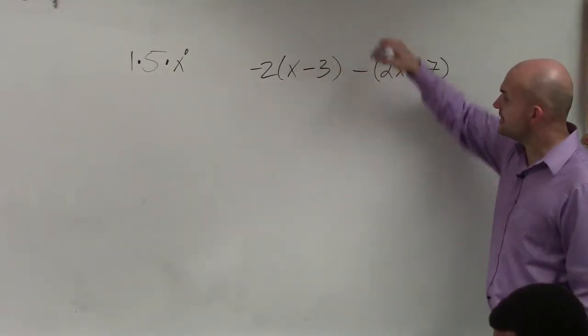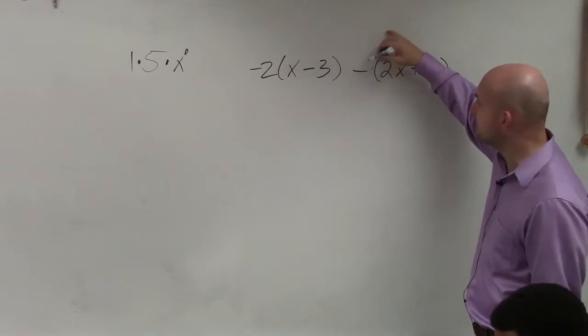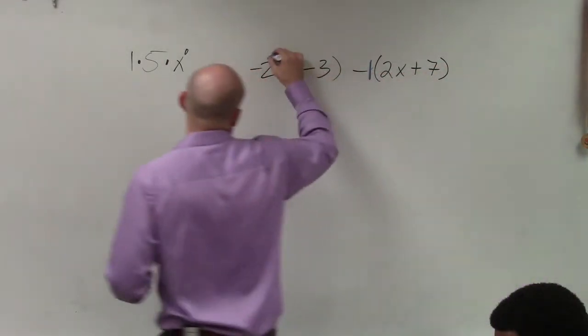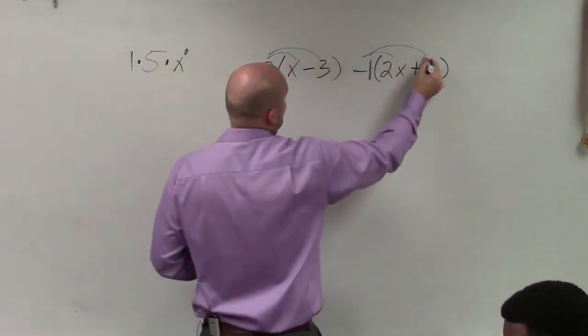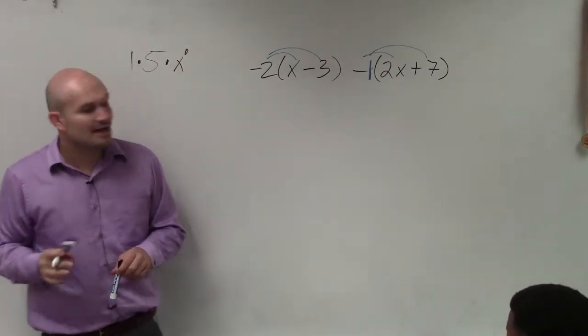So what I want you guys to understand is if this is just a minus, minus what? It's minus 1 times each one of those. So now when I apply my distributed property, you got to make sure you multiply negative 2 times both terms and negative 1.